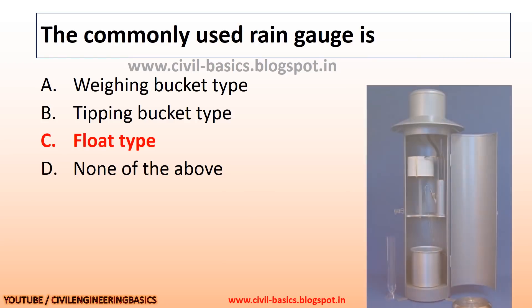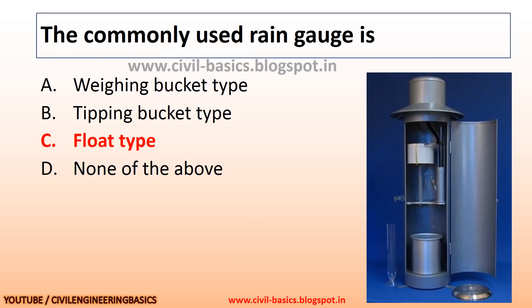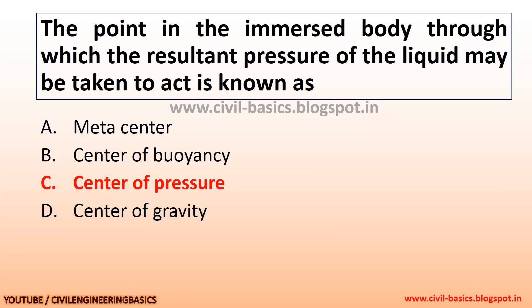The commonly used rain gauge is the float type rain gauge. The point in an immersed body through which the resultant pressure of the liquid may be taken to act is known as the center of pressure.